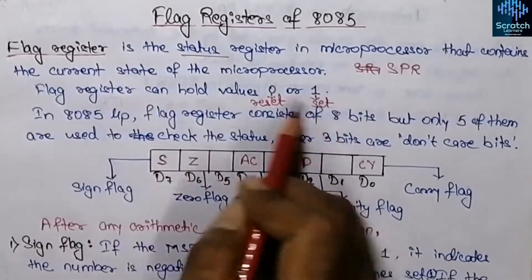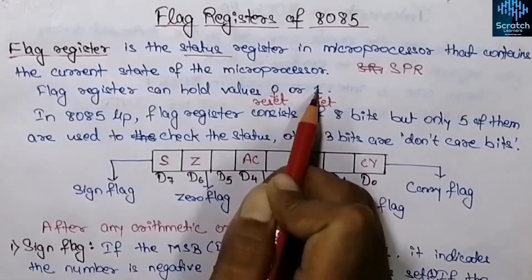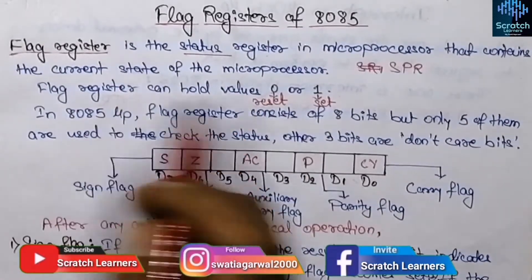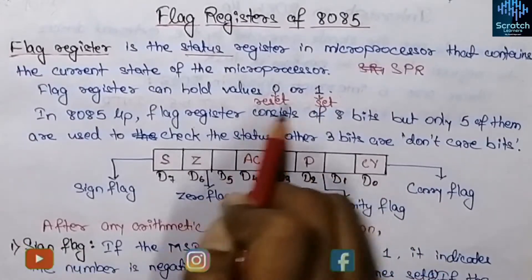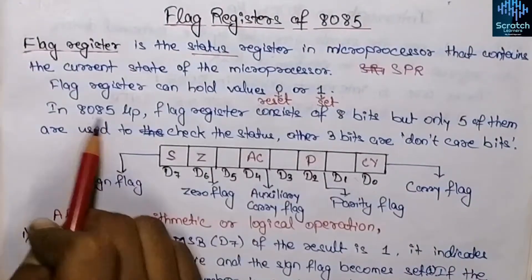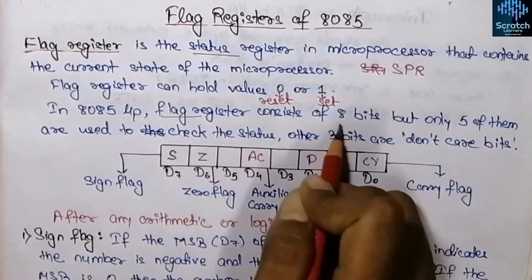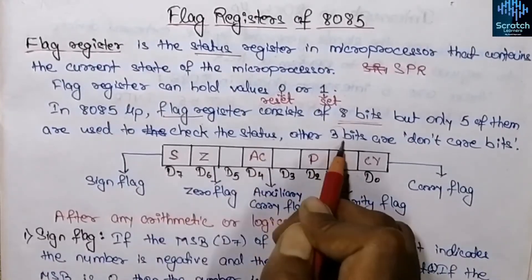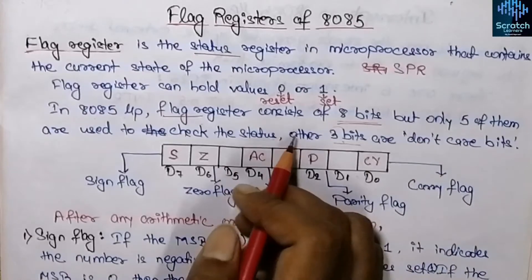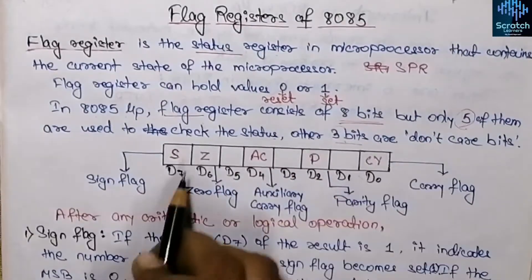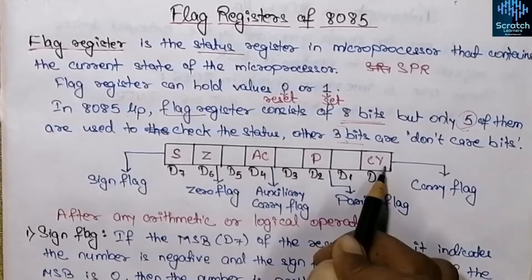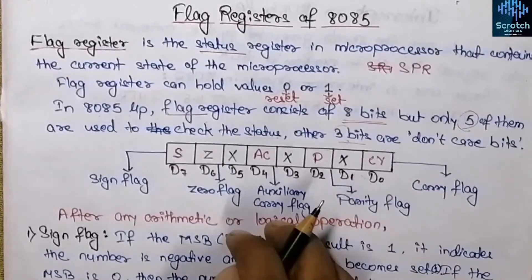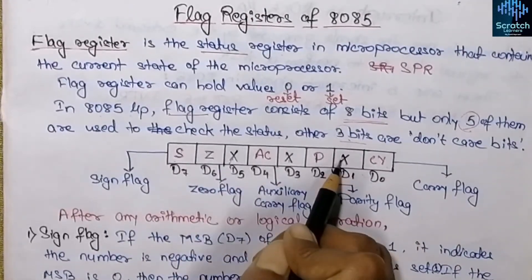The flag register can hold only one value at a time — either 0 or 1. Bit 1 means set and bit 0 means reset. In the 8085 microprocessor, the flag register consists of 8 bits but only 5 of them are used to check the status; the other 3 bits are don't care bits. You can see there are 5 flag registers and the three remaining positions are the don't care bits that remain unassigned.